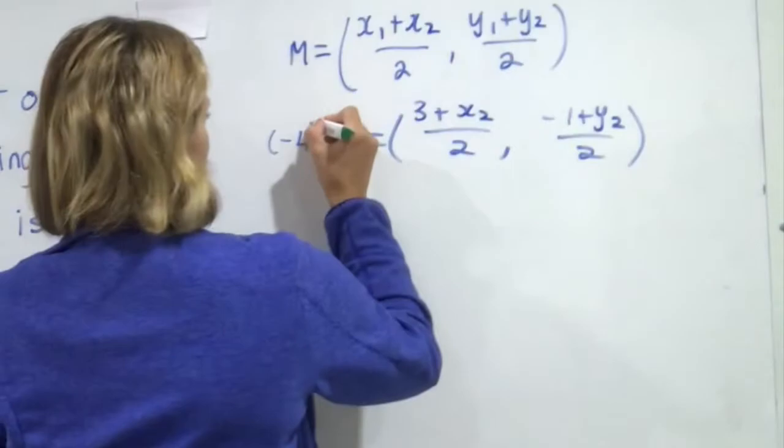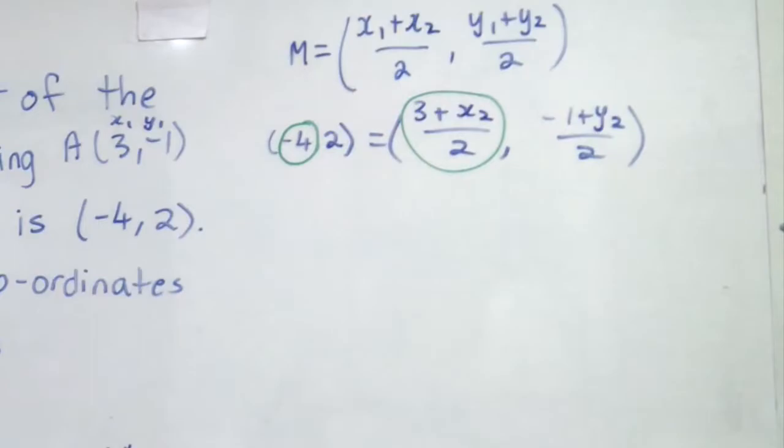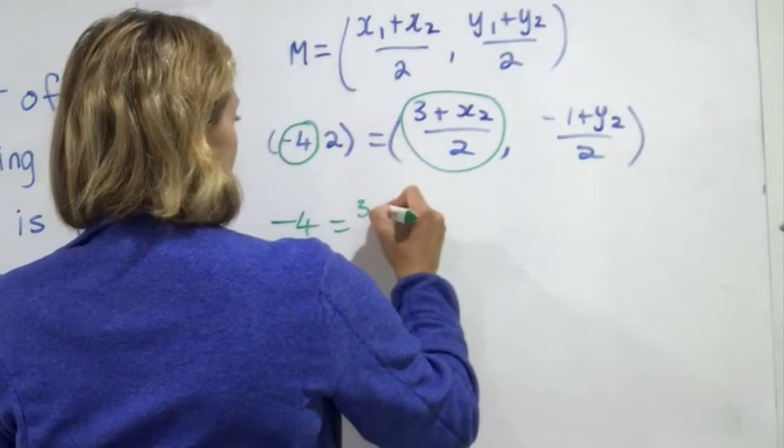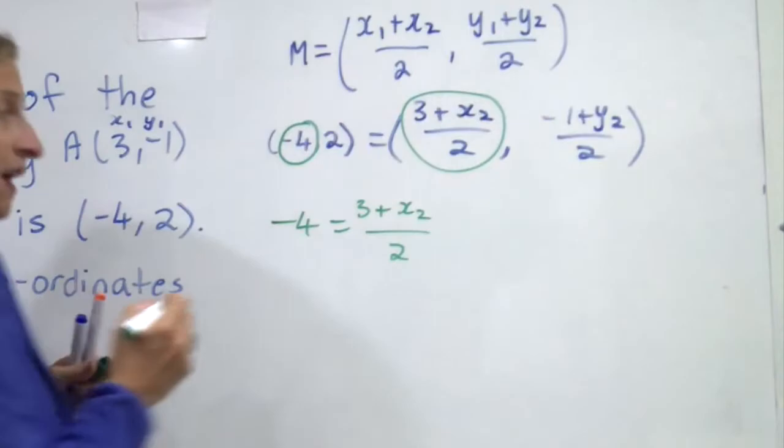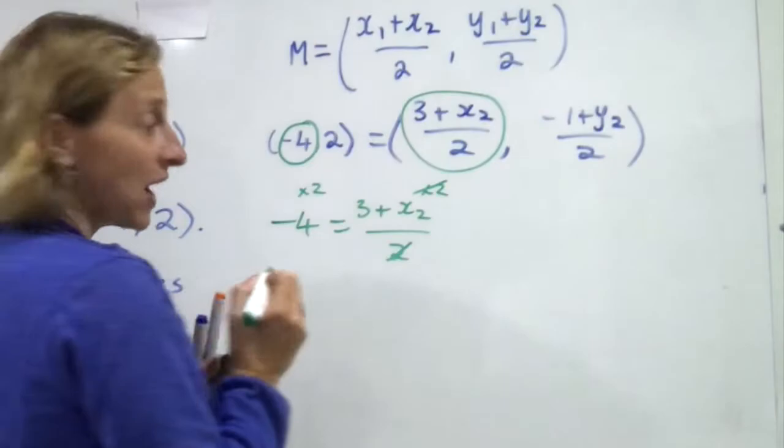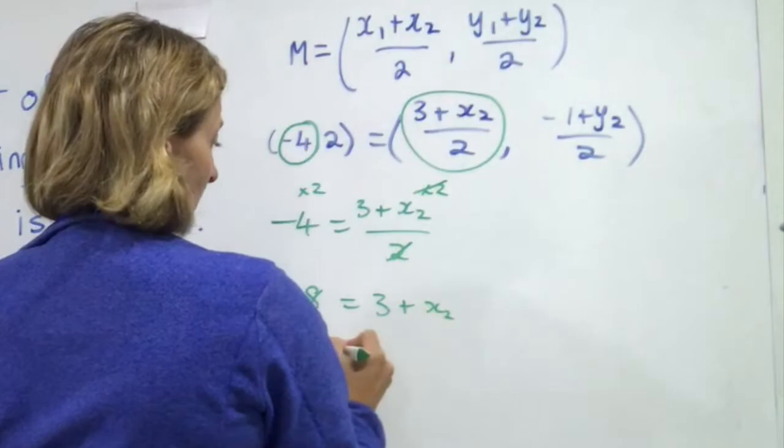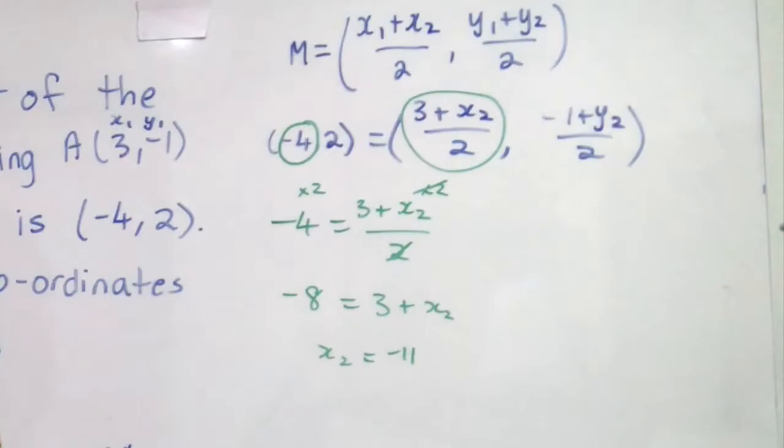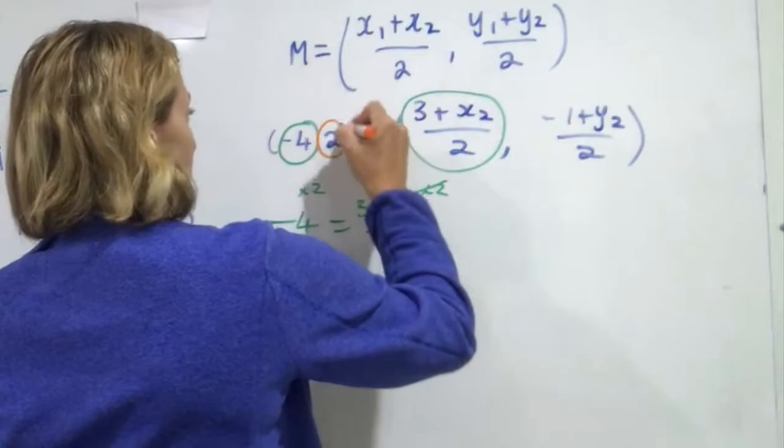Now this is where it gets a little bit tricky. Because I'm saying that this is the x value of the midpoint. Isn't this the x value of the midpoint as well? So that must mean that -4 equals 3 plus x2 on 2. And I should be able to now solve that to get the value of x2. Times both sides by 2 to get rid of the fraction. I'm left with -8 equals 3 plus x2. So x2 equals -8 minus 3 is -11. So far so good.